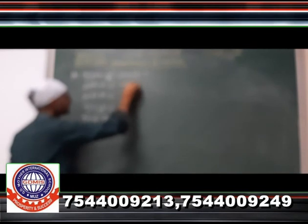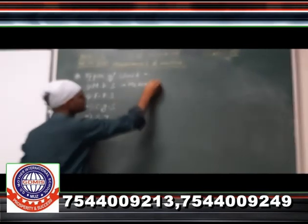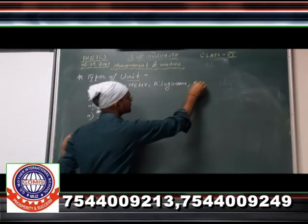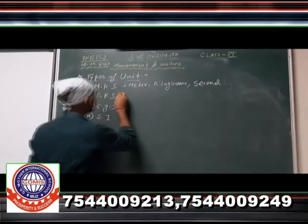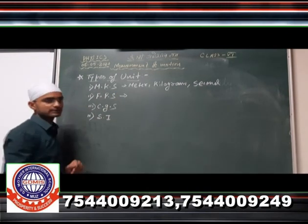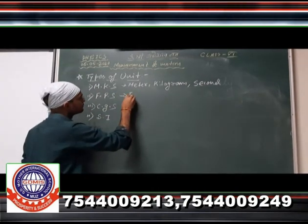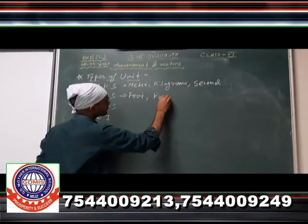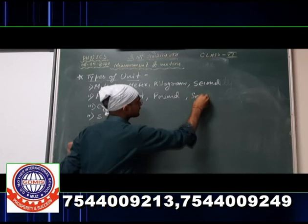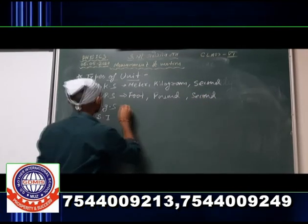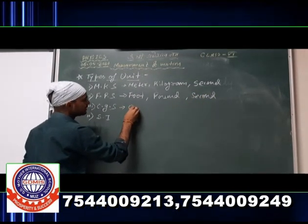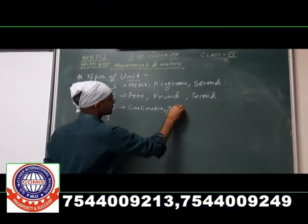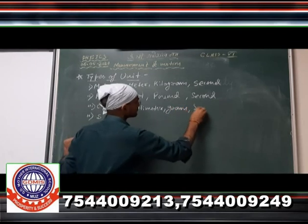MKS, it means full form that is meter, kilogram, second. FPS, the full form is foot, pound and second. CGS, centimeter, gram, second.